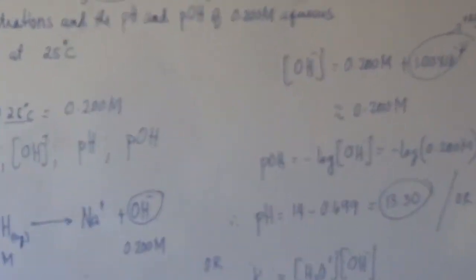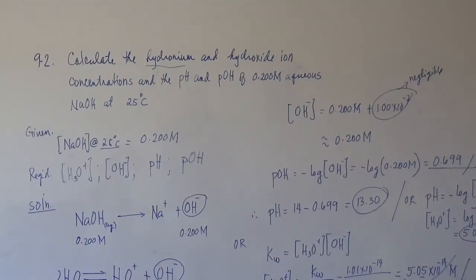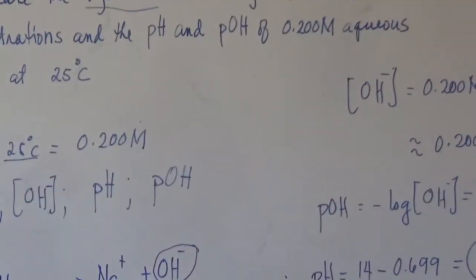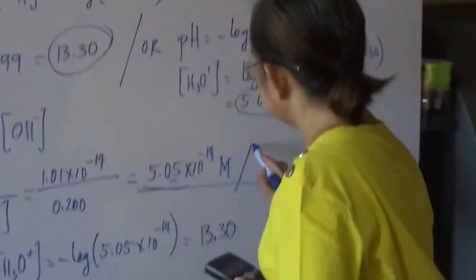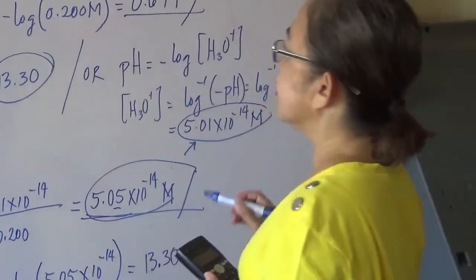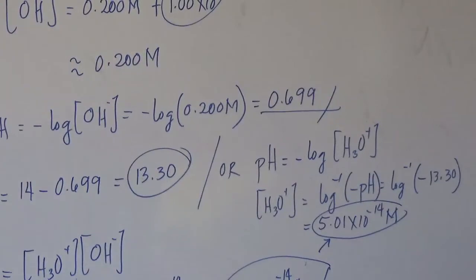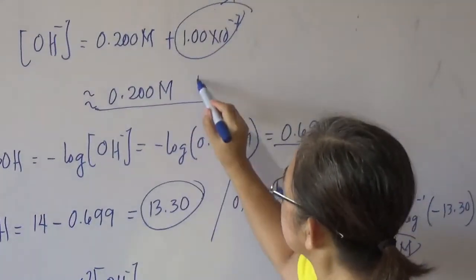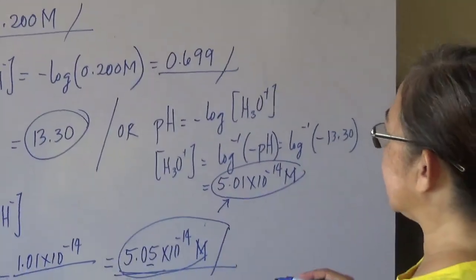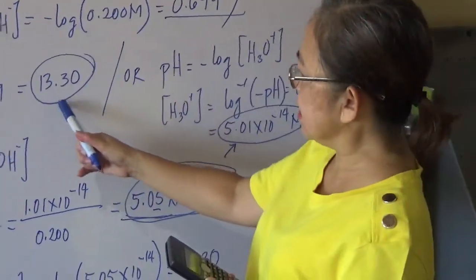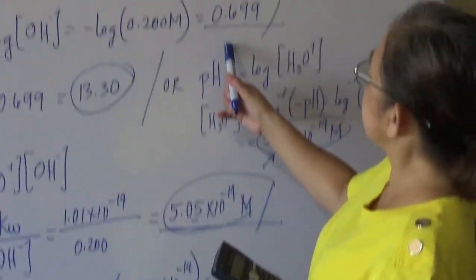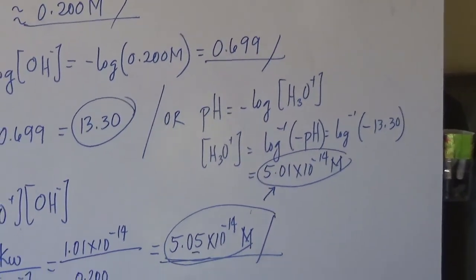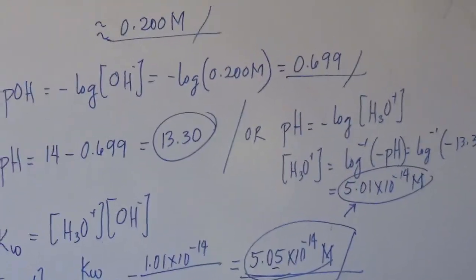To summarize problem 9.2: the concentration of hydronium ion is 5.05×10⁻¹⁴ molar, the concentration of hydroxyl ion is 0.2 molar, the pH is 13.3, and the pOH is 0.699. Thank you.